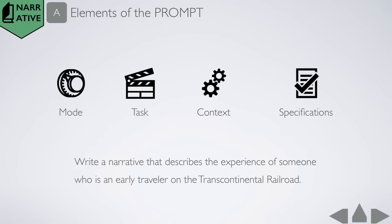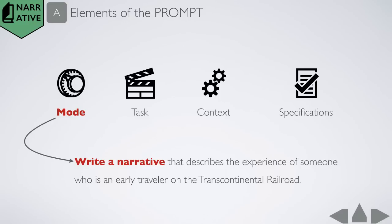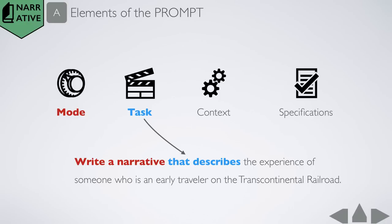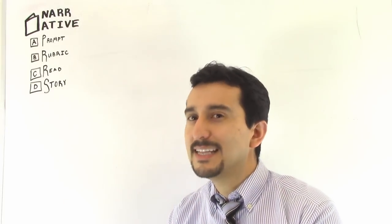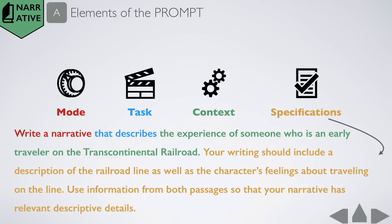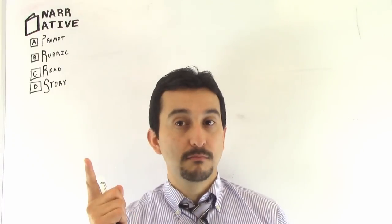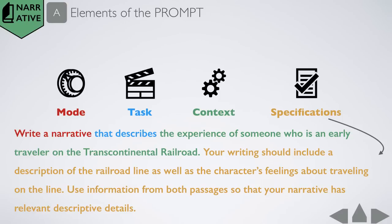In the case of the practice prompt, write a narrative that describes the experience of someone who is an early traveler on the transcontinental railroad. We have the mode right there at the front: write a narrative. And we are going to focus on descriptive detail because that's what the task highlights. The context tells us how we're going to build a setting and our characters revolve all around being an early traveler on the transcontinental railroad. So we got our narrator, character, and our setting contained in the context. But there are some specifications that we need to pay close attention to too. Your writing should include a description of the railroad line as well as the character's feelings about traveling on the line, and of course, use information from both passages.